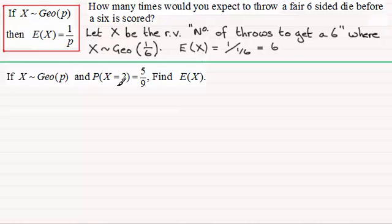Now in this second example I said that this was a bit more demanding, and it's if X is distributed geometrically with parameter p and the probability of X equaling 2 is five-ninths, find E(X). Well for this one, if we've got the probability X equals 2, if I was to work out that probability that X equals 2, then I'd want to do the probability that X equals 1 plus the probability that X equals 2.